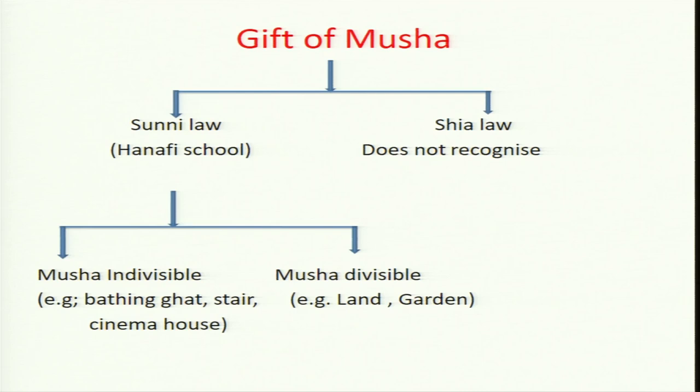If property is jointly owned by several owners and a Muslim donor wants to make a gift of that joint property, the question is what procedure should be followed. Under Shia law, the position is clear: if the donor belongs to the Shia sect and the property is jointly owned, the Shia donor must at least specify his share — after specifying his share, he can make a gift, and there is no problem in Shia law.